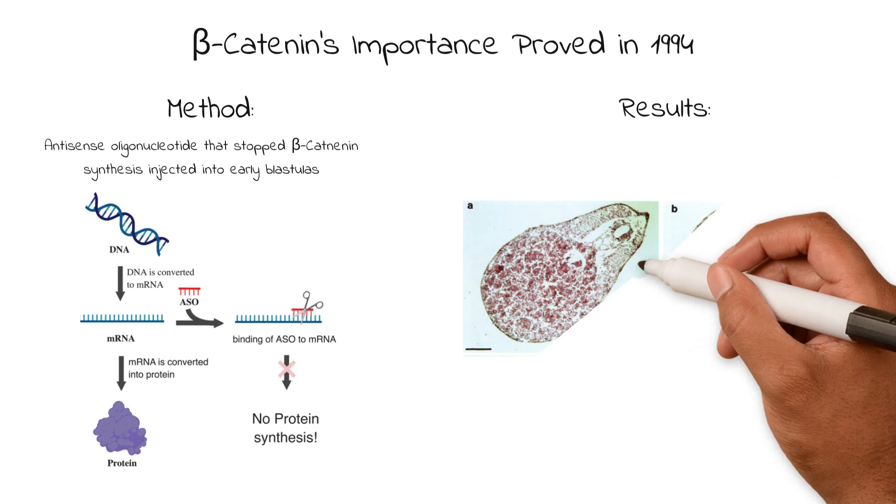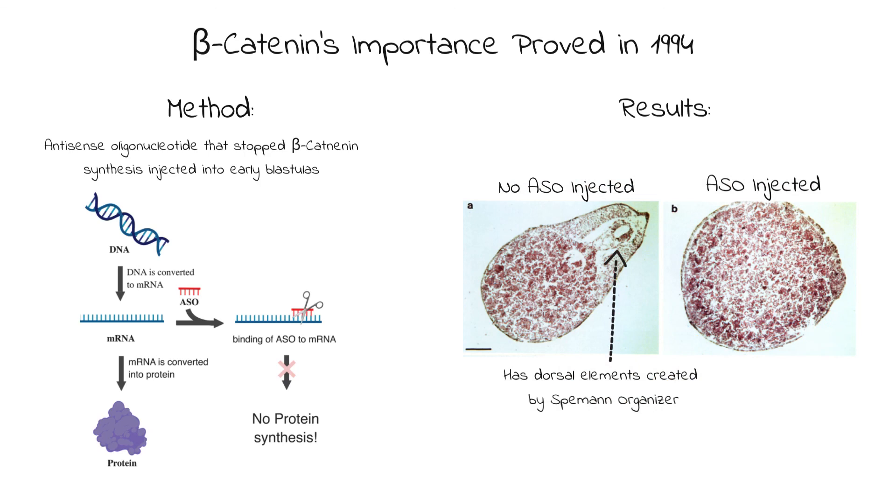By doing this, they were able to greatly reduce the production and accumulation of beta-catenin in the embryo, resulting in an embryo without a body axis as it matured, meaning that the dorsal mesoderm had similar phenotypes to that of the ventral mesoderm.